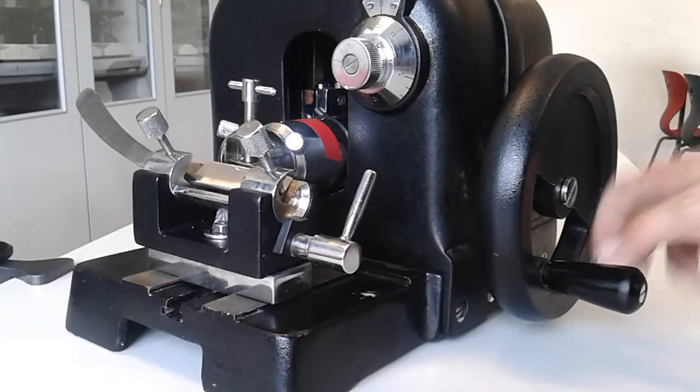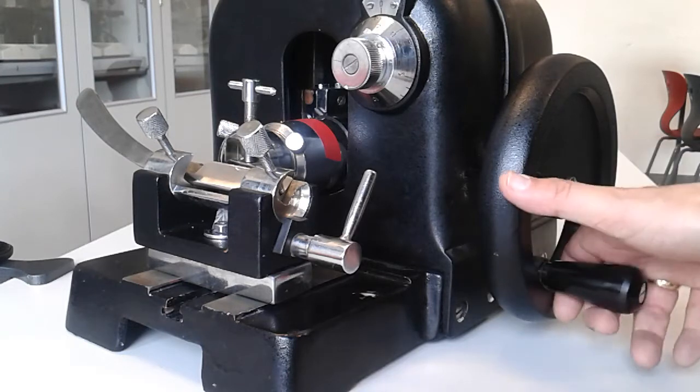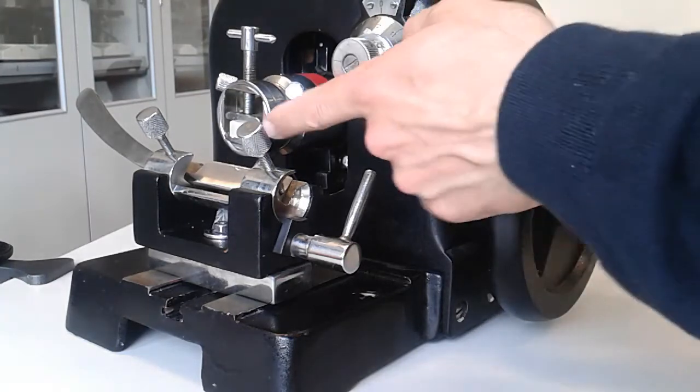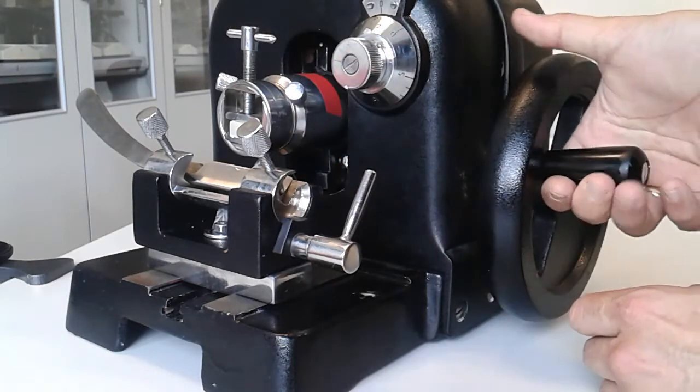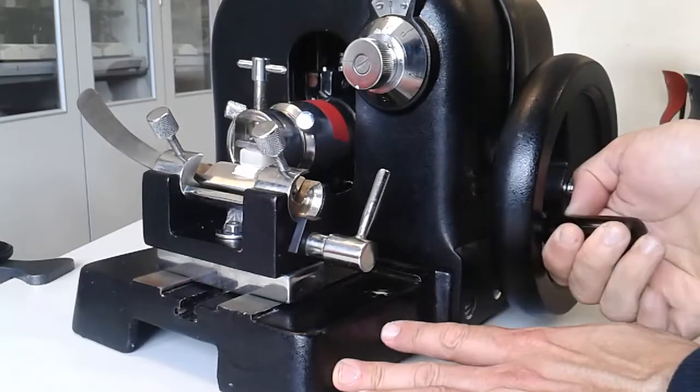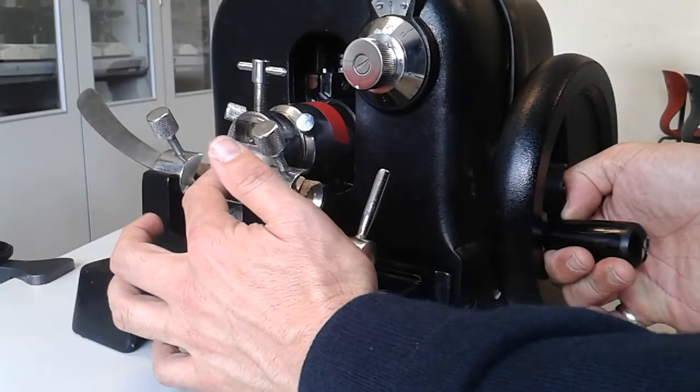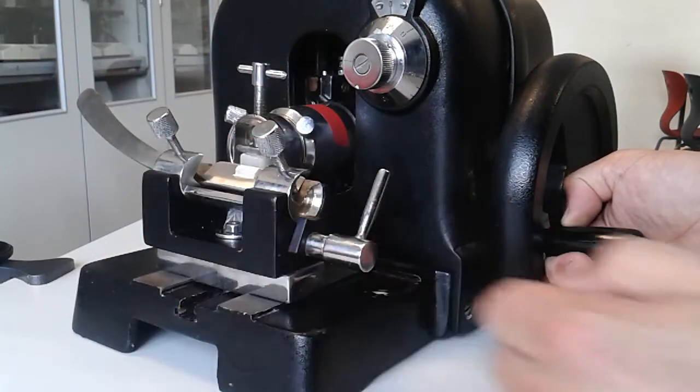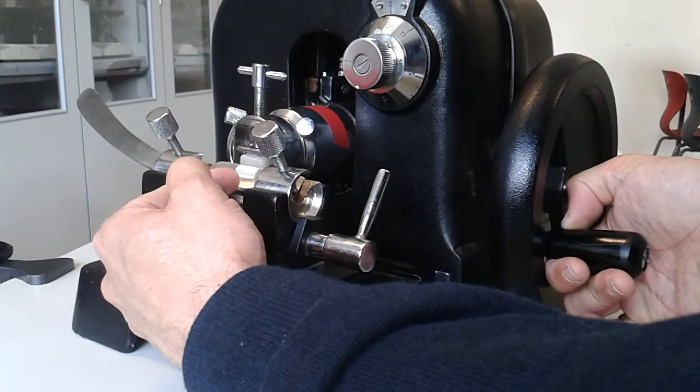When you use a rotary microtome, you first have to operate this crank over here. You can see that the specimen, which is embedded in paraffin, is raised and lowered. At the same time, the specimen also moves forward a little bit. As it passes by the sharp knife over here, it makes a very thin cut, and you can take the thin cut and put it on a microscope slide.